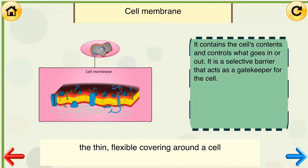Cell membrane. The thin, flexible covering around a cell. It contains the cell's contents and controls what goes in or out. It is a selective barrier that acts as a gatekeeper for the cell.